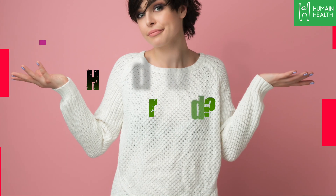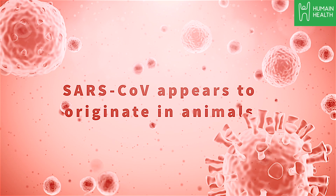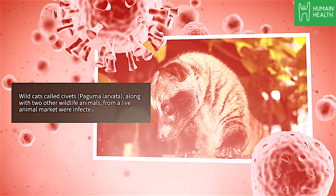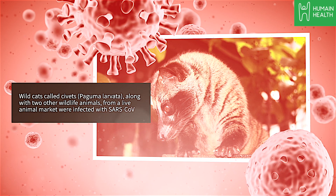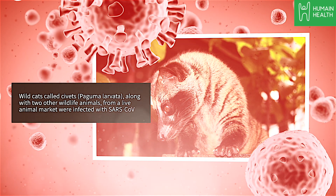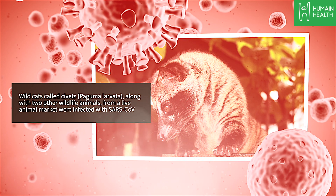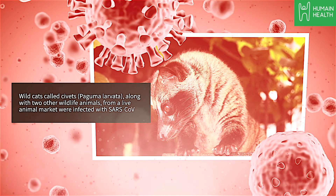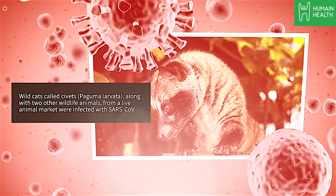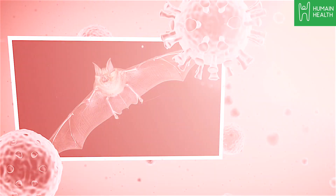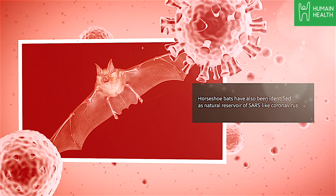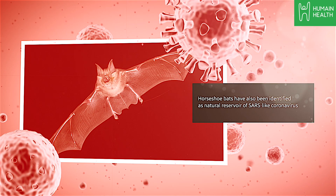So how exactly did SARS spread? SARS-CoV appears to originate in animals. Virological studies indicate that wild cats called civets, along with two other wildlife animals from a live animal market, were infected with SARS-CoV. These animals then exposed humans to the virus. Horseshoe bats have also been identified as natural reservoirs of SARS-like coronavirus.